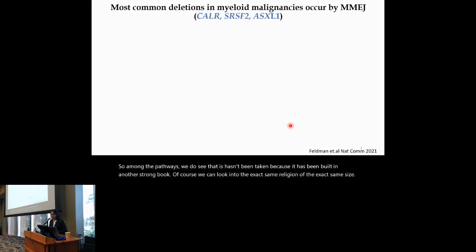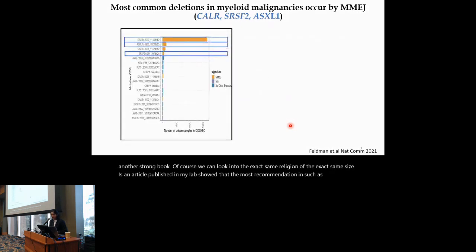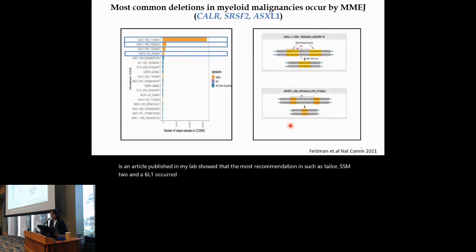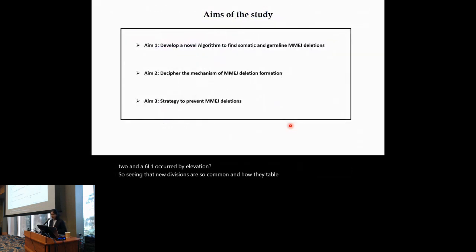Recently, an article published from our lab showed that the most common deletions in myeloid malignancies, such as CALR, SF3B2, and ASXL1, occurred by MMG. So, since the MMG deletions are so common and highly predictable, we thought of developing a novel algorithm to find both somatic and germline MMG deletions. Secondly, we were also interested to decipher the mechanism of MMG deletions formation, and thirdly, we wanted to devise a strategy to prevent such type of deletions.